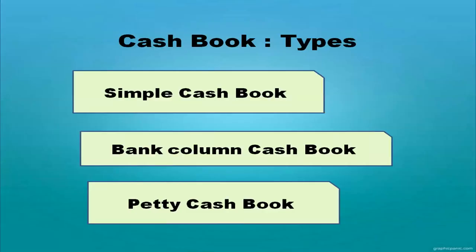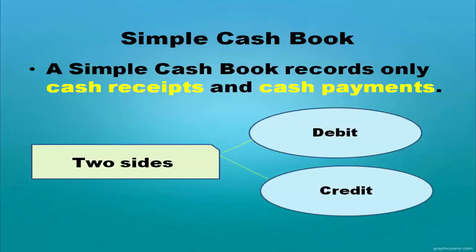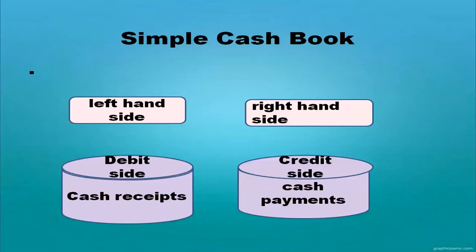There are mainly three types of cash book: simple cash book, bank column cash book, and petty cash book. Simple cash book records only cash receipts and cash payments. There are two sides — the debit side and the credit side. The left-hand side is the debit side, where cash receipts are recorded. The right-hand side is the credit side, where cash payments are recorded.